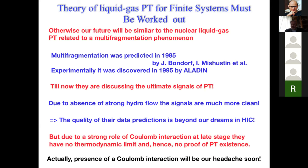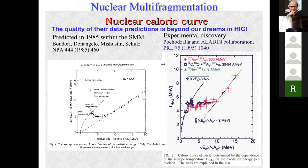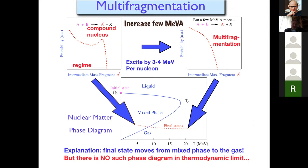However, due to strong role of Coulomb interaction at late stage, they really have no thermodynamic limit and hence no proof of phase transition existence. And I remind you that the presence of Coulomb interaction, if we're searching for critical endpoint, will be our headache soon. Now just to illustrate the quality of their data predictions, this slide was taken from Botvina and Schuettauf's talk. On the left hand side you can see their prediction. The solid curve is the typical behavior of quantum liquid, while the dash curve is the gas of nuclei. You see they predicted it, and on the right hand side you can see how it was measured. I would like to stress that even this little bump on the left hand side picture was measured and supported, and so it's really nice.